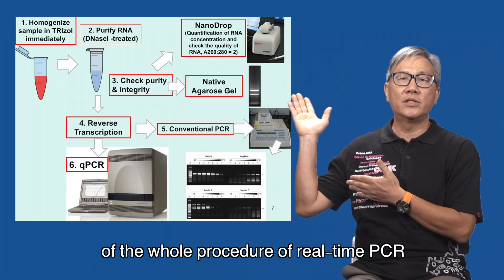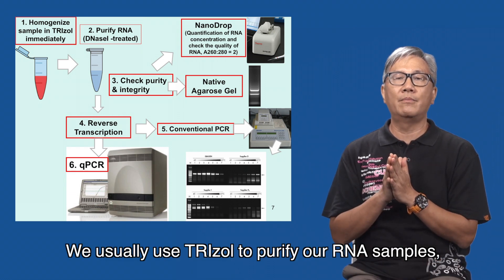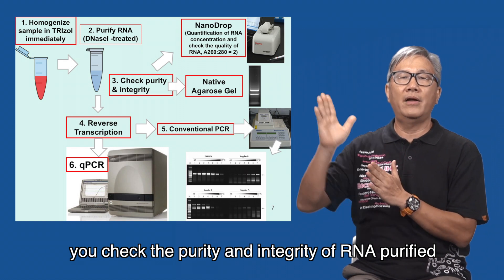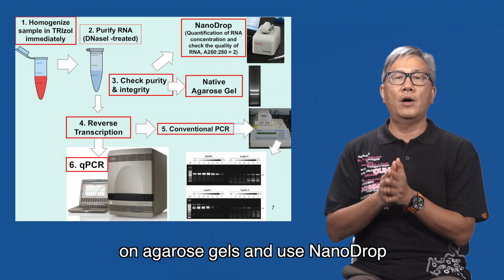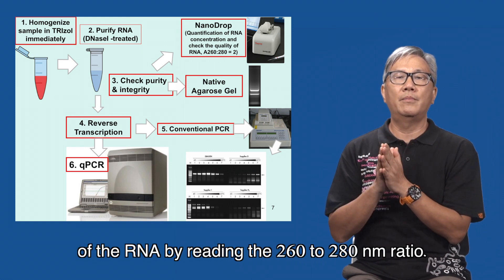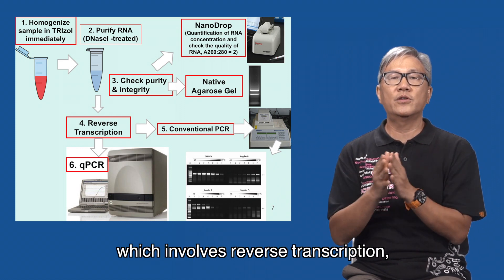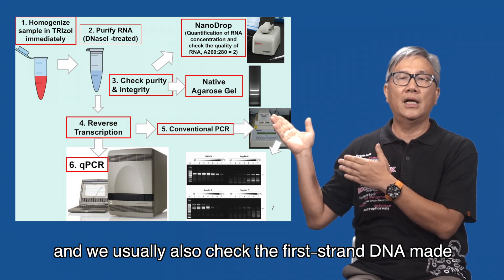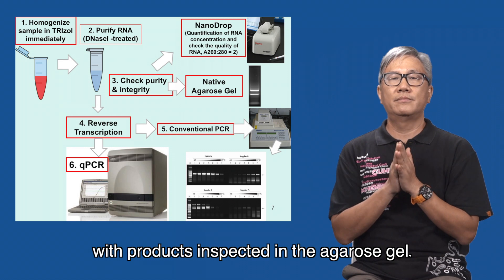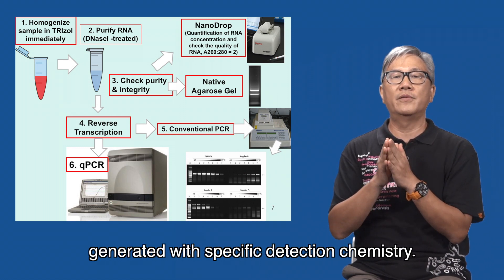Here is a diagram of the whole procedure of real-time PCR, or qPCR — quantitative real-time PCR. We usually use TRIzol to purify our RNA samples, and we may use DNase to remove DNA contamination. In step three, you check the purity and integrity of the purified RNA on an agarose gel, and use a NanoDrop to quantify the RNA. You check for DNA contamination or the quality of the RNA by reading the 260 to 280 nm ratio. In step four, we produce the first-strand cDNA which involves reverse transcription, and we usually also check the first-strand cDNA made to see if we can make any conventional PCR products, inspected on the agarose gel. Finally, quantitative real-time PCR can be carried out in a machine to quantify the PCR products generated with specific detection chemistry.